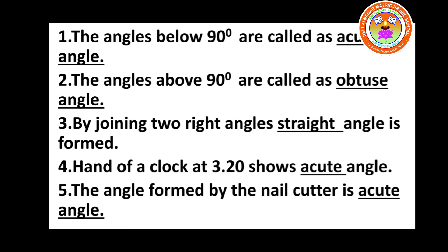Your first fill up: the angles below 90 degree are called acute angle. We have learned — what is acute angle? It lies between 0 degree and 90 degree. Second: the angles above 90 degree are called obtuse angle. That is, the angles that lie between 90 degree and 180 degree are called obtuse angle. Third: by joining 2 right angles, it forms a straight angle. By joining 2 right angles, straight angle is formed.